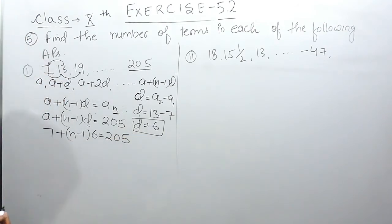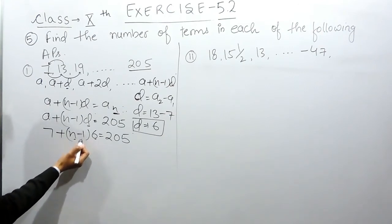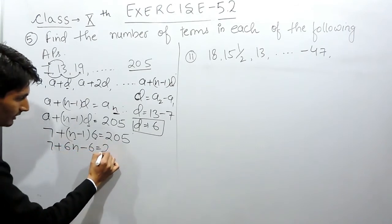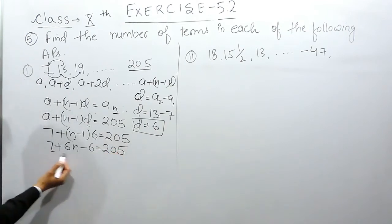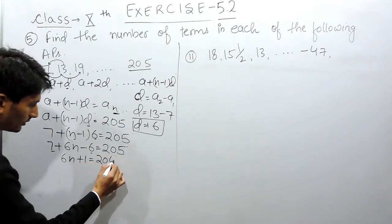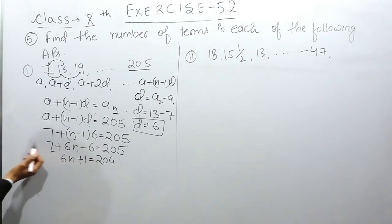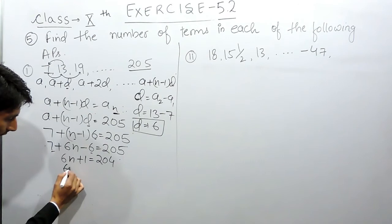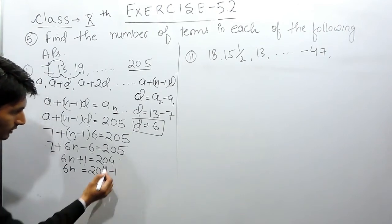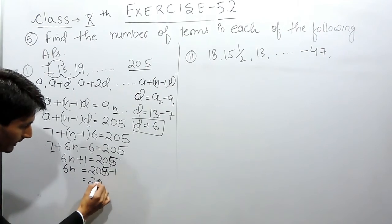Now we can simply solve this equation. First of all, we have to open the bracket. We multiply 6 with both terms: 6 multiplied by N is 6N, and 6 multiplied by 1 is minus 6. So 7 minus 6 is 1, which is positive. Now I can shift this 1 to the other side — sorry, this is 5 — so 205 minus 1 becomes 204.